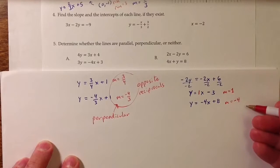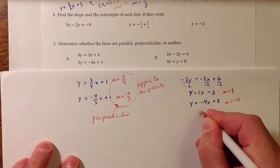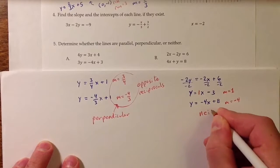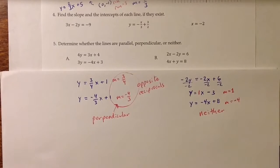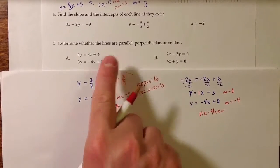So those are neither opposite reciprocals, nor are they the same. And so this is not parallel, nor is it perpendicular, and so neither. That pair doesn't fit into either of those two categories.